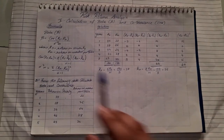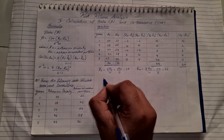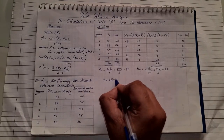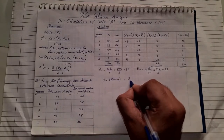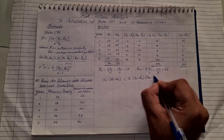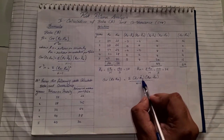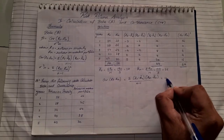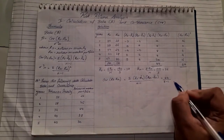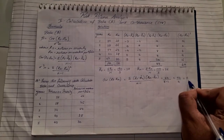Now we apply the formulas. To find beta, we first need covariance. Covariance = summation of (RS minus R-bar-S) into (RM minus R-bar-M) upon N minus 1 = 44 divided by (5 minus 1) = 44 divided by 4 = 11.